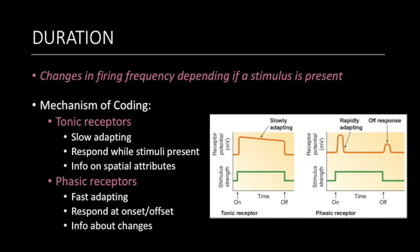Finally, the duration of the stimulus uses two types of receptors that either adapt slowly or quickly to code changes in action potentials firing frequency. Slow adapting receptors are called tonic receptors, and they give information about spatial attributes of the stimulus and continue to respond to the stimulus so long as it's present. Fast adapting receptors are called phasic receptors, and they give information about changes in the ongoing stimulation by responding only at the onset and offset of the stimulus.